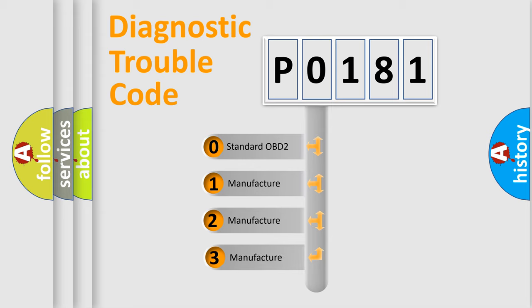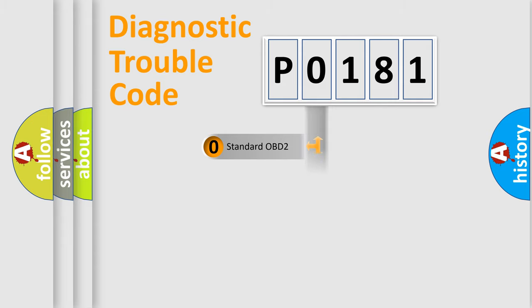If the second character is expressed as zero, it is a standardized error. In the case of numbers 1, 2, 3, it is a more prestigious expression of the car specific error.